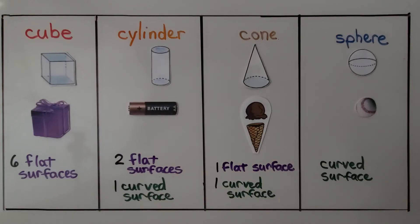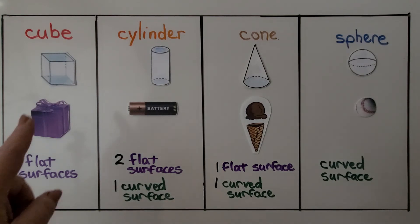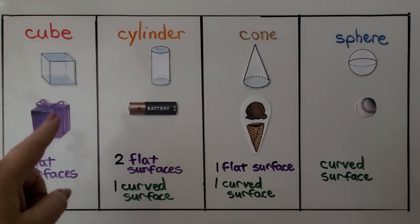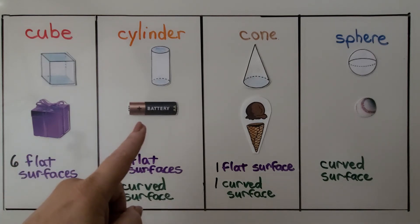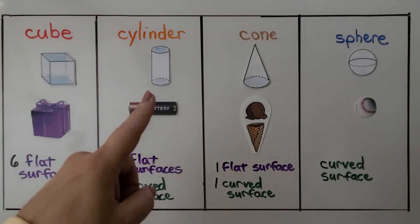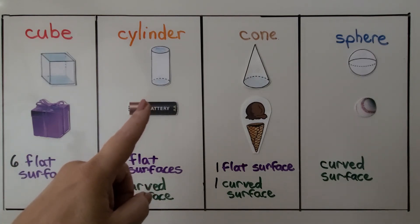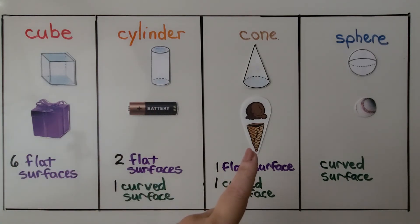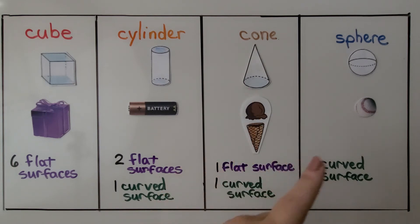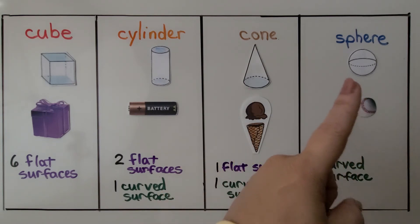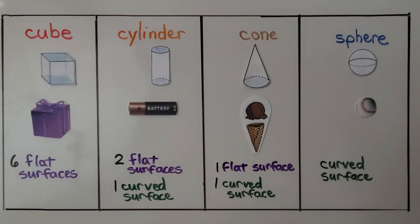There are things all around us that are shaped like solid figures. A birthday present box could be shaped like a cube. A battery is shaped like a cylinder. An ice cream cone is shaped like a cone, and a baseball is shaped like a sphere.